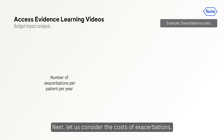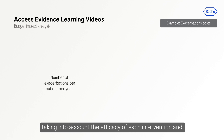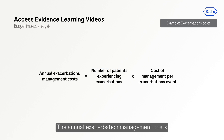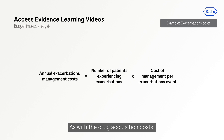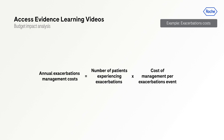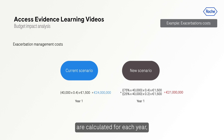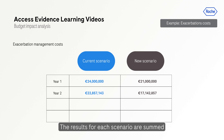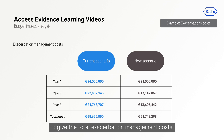Next, let's consider the costs of exacerbations, taking into account the efficacy of each intervention and the costs associated with the management of exacerbations — 1,500 euros. The annual exacerbation management costs for each scenario are calculated by multiplying the number of patients experiencing exacerbations by the cost of managing an event. As with the drug acquisition costs, the exacerbation management costs for each scenario are calculated for each year, taking into account the treatment mixes and 5% discounting rate. The results for each scenario are summed to give the total exacerbation management costs.